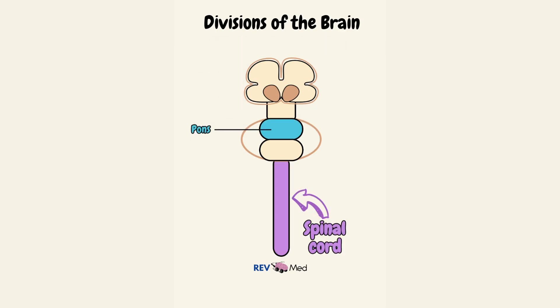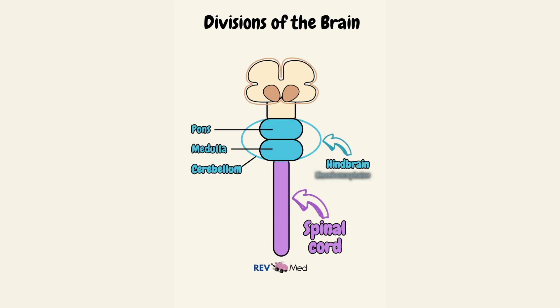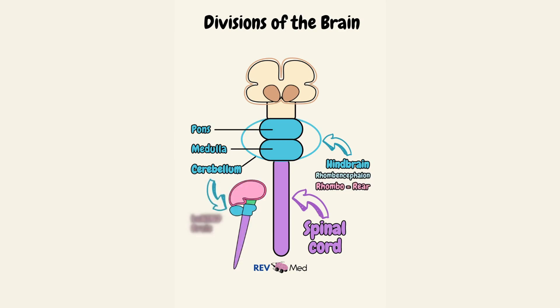The pons, medulla, and cerebellum as a group are called the hindbrain, also known as the rhombencephalon. The cerebellum — R for rhombo — means rear or behind brain.